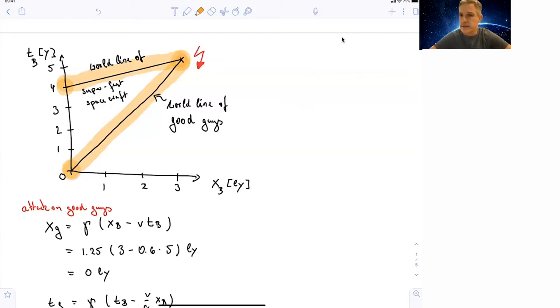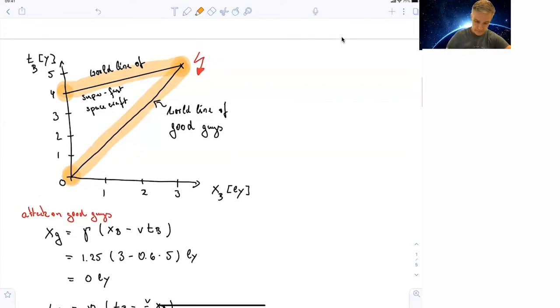If we analyze this for the good guys, we find the x position, the position of the attack. We find gamma times x_b minus v times t_b. If you put in the numbers,